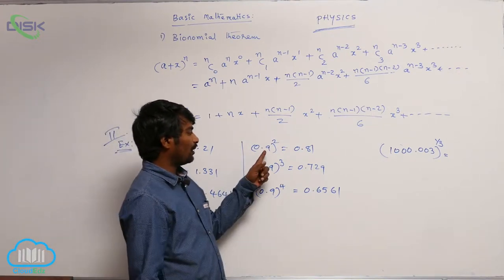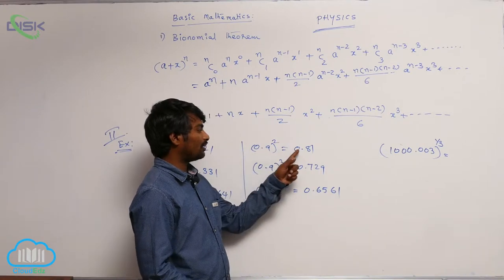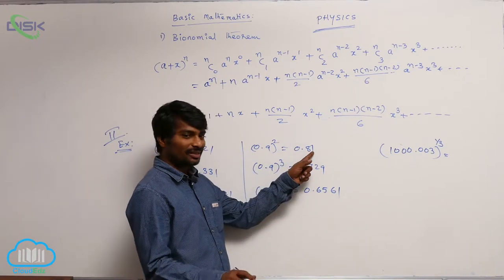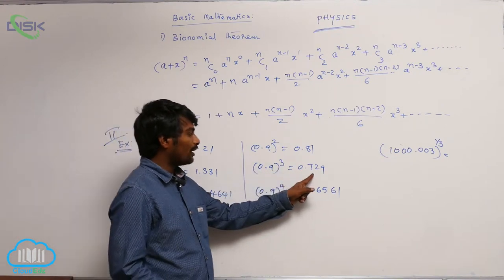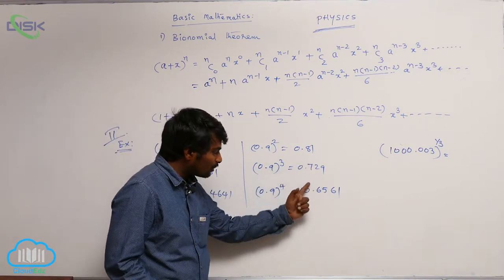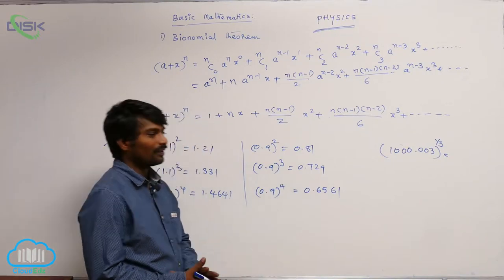If I take 0.9, if you square it, it is 0.81, that is less than 0.9. If you cube, 0.729. The value is going on decreasing.